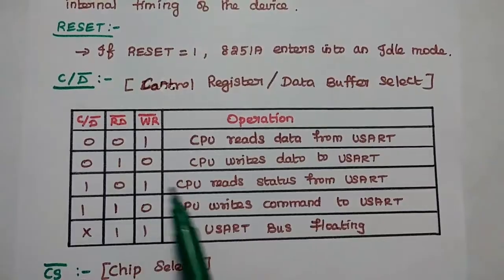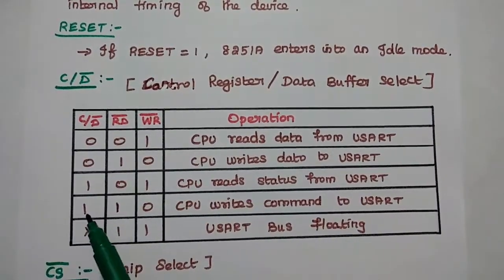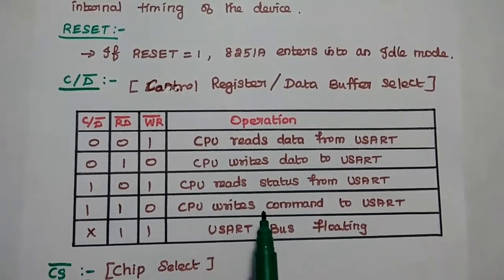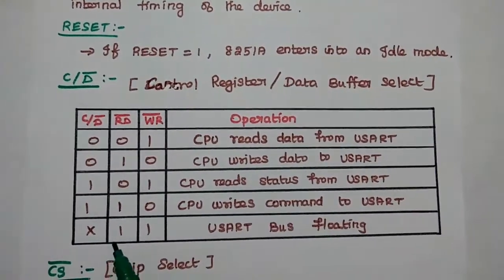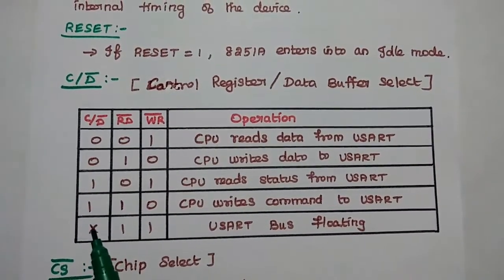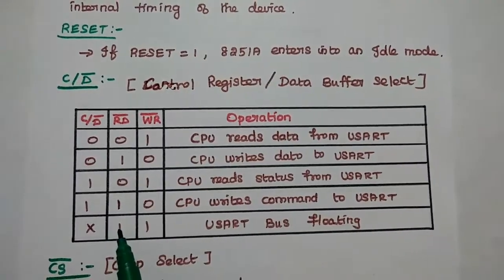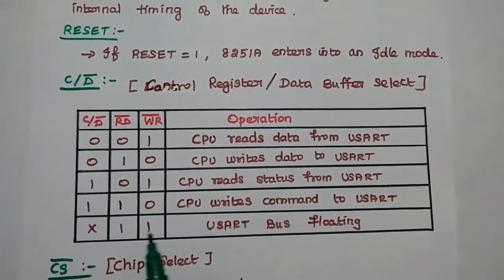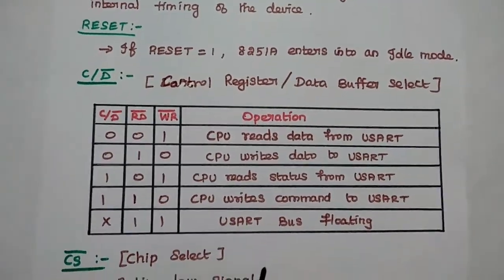When the combination is 101, the CPU reads status from the USART. When it is 110, the CPU writes a command word to the USART. X represents a don't-care condition, meaning it can be either 0 or 1. When both read bar and write bar signals are high, the USART bus floats the values.